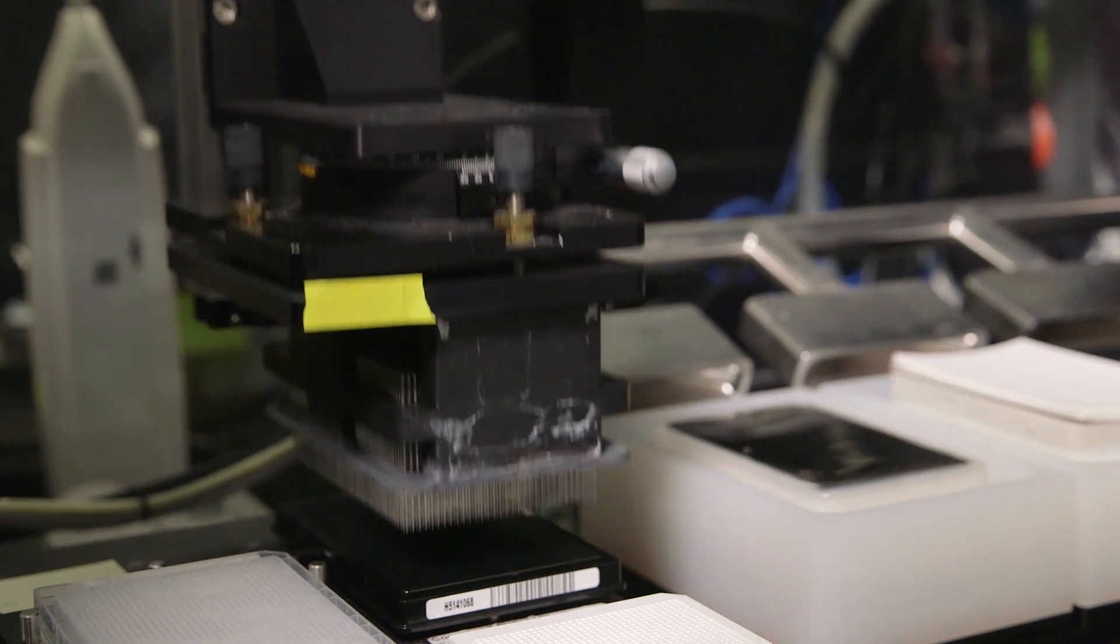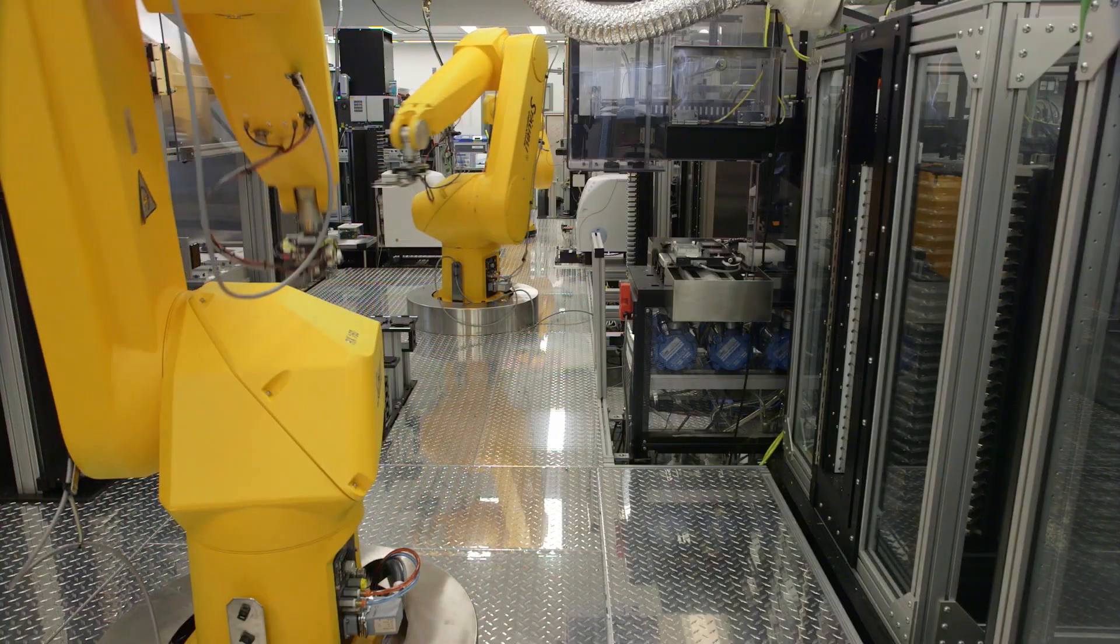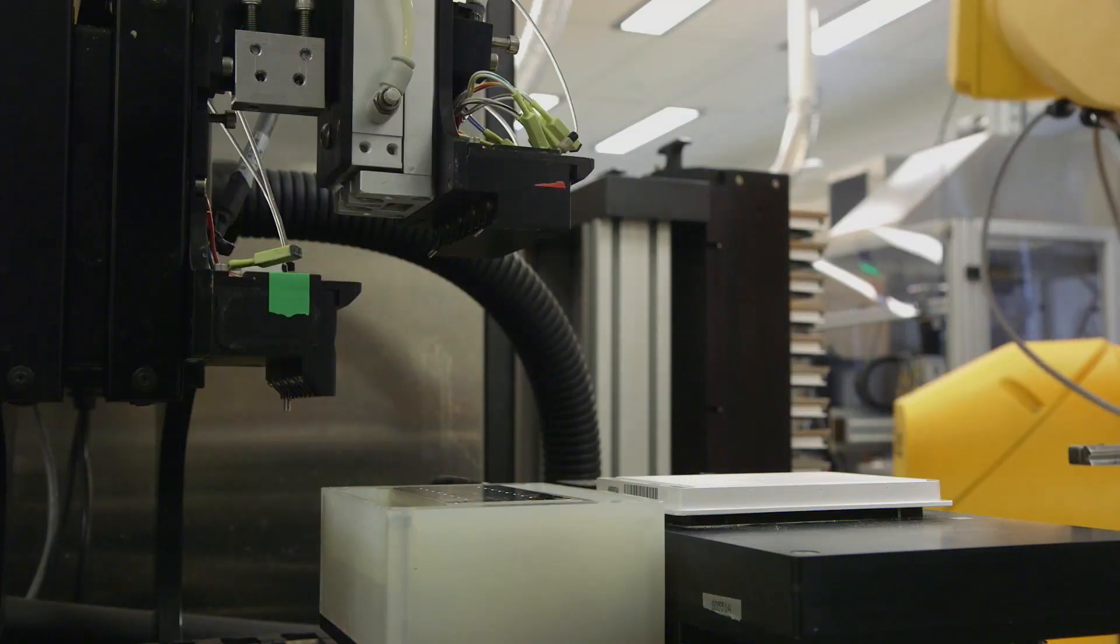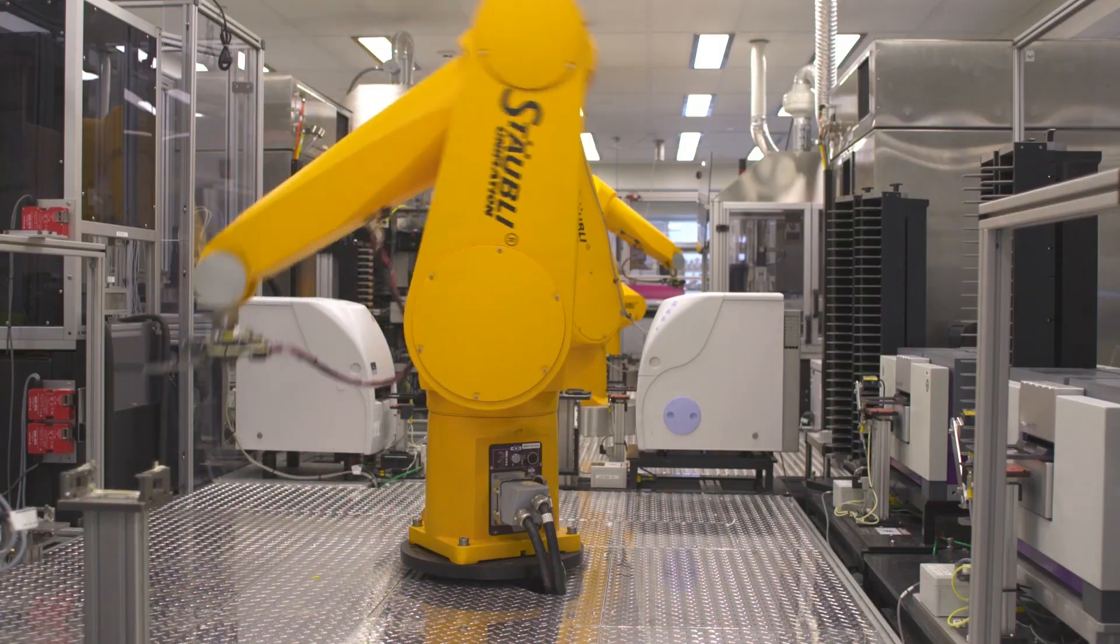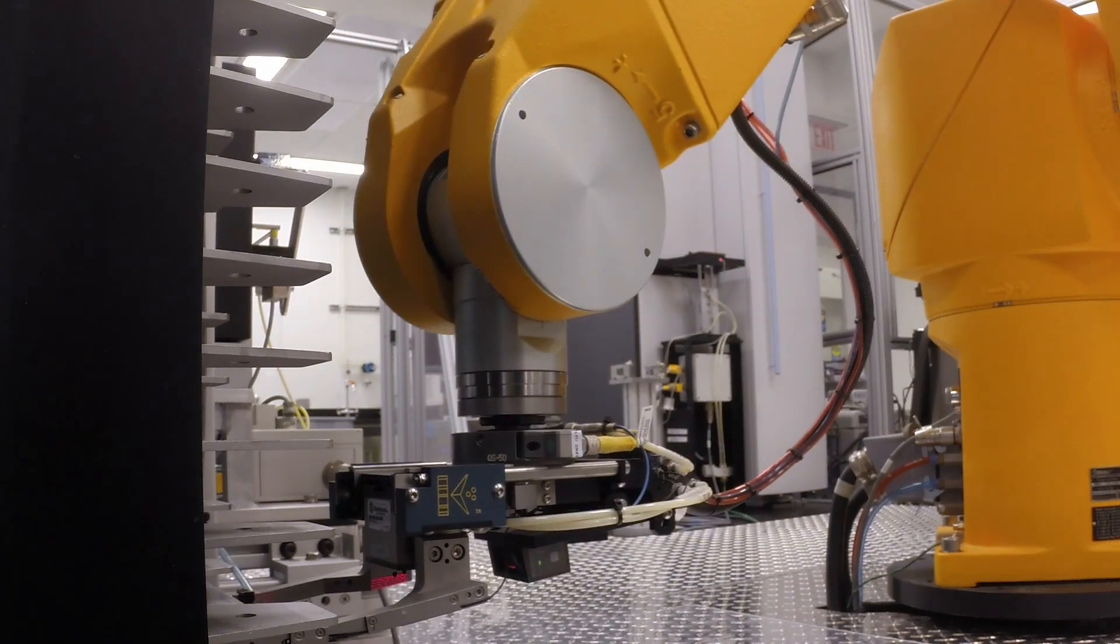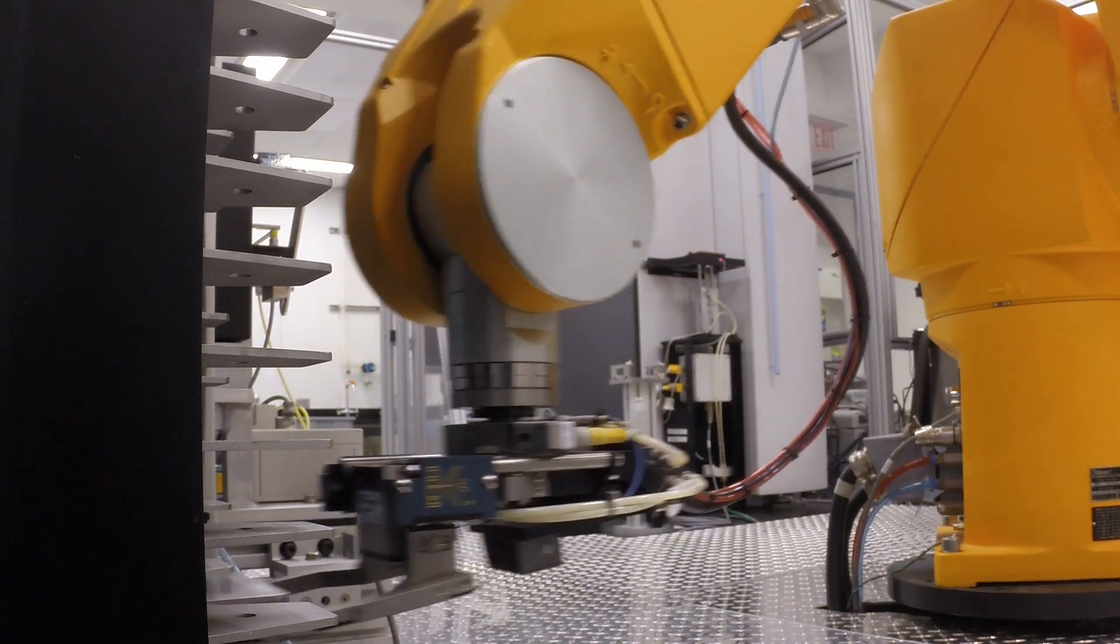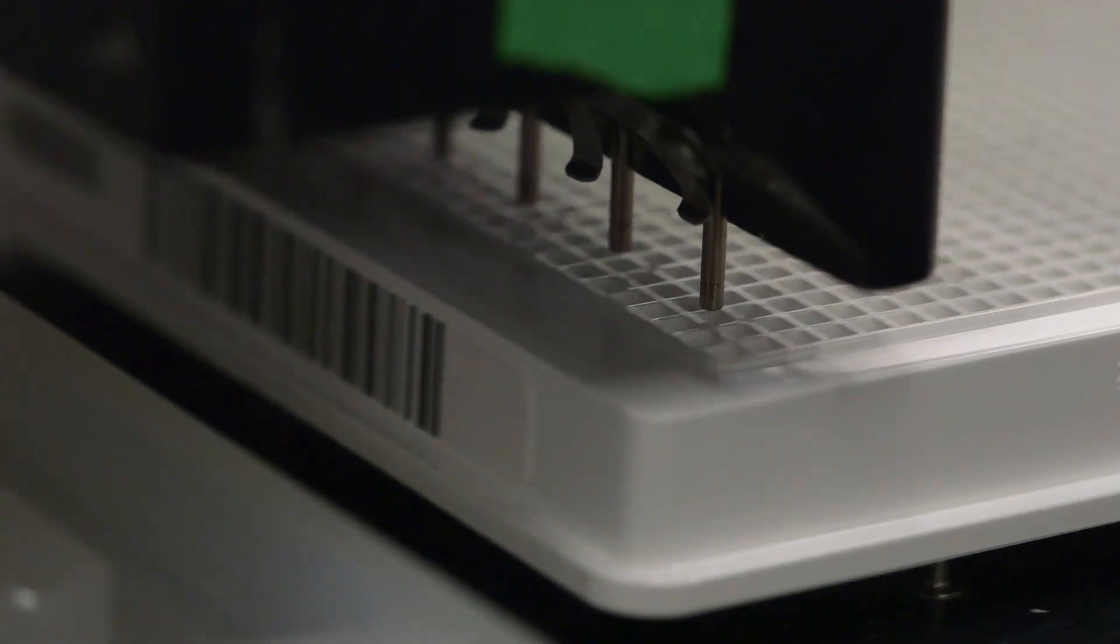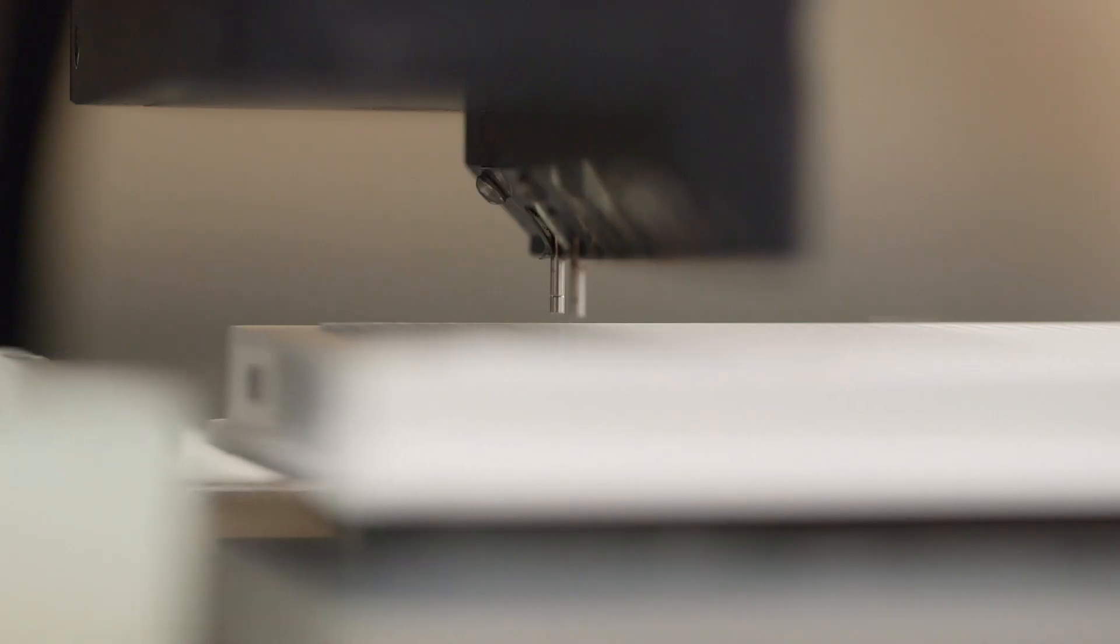NCATS preclinical researchers use a state-of-the-art, high-throughput robotic screening system to test hundreds of thousands of compounds that are potential drugs against disease-relevant assays. An assay is a test using cells or proteins involved in a particular disease or biological process the researchers want to study.